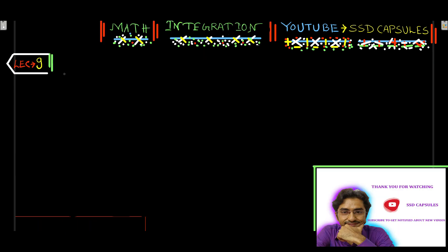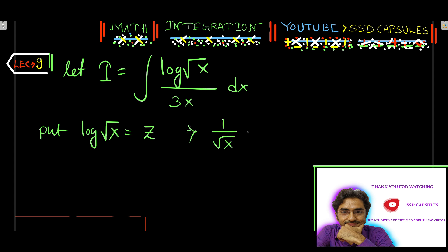So let I equal to integration log root x by 3x dx. We are going to solve this problem by method of substitution. Put log root x equal to z, which implies 1 by root x and derivative of root x means half x to the power minus half dx equal to dz.